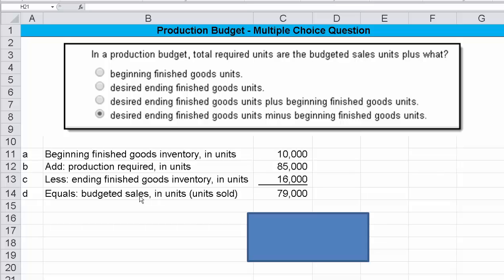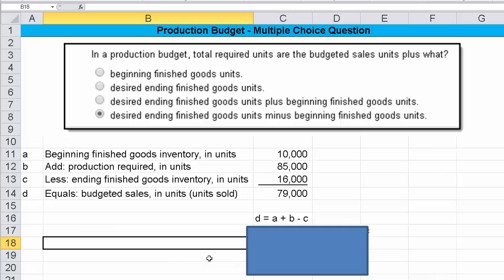Okay, so that's our typical formula, but they're asking us how do we solve for the required units? So that's B. This is column B here. So if we put variables to this, what do we see? We see that D is equal to A plus B minus C, right? 10,000 plus 85,000 minus 16,000 gives us our budgeted sales. But this question is saying, what's total required units?